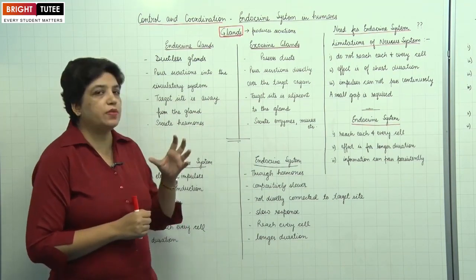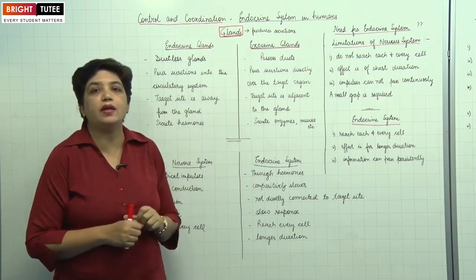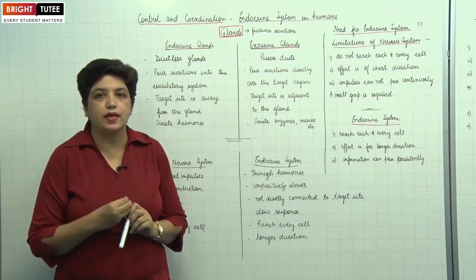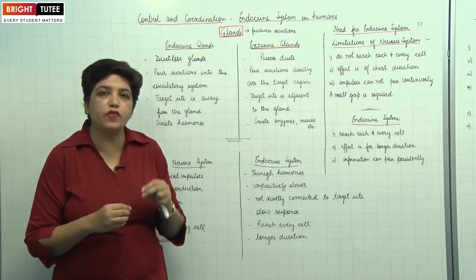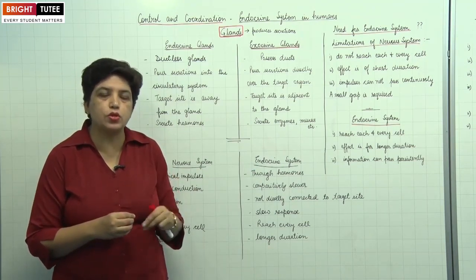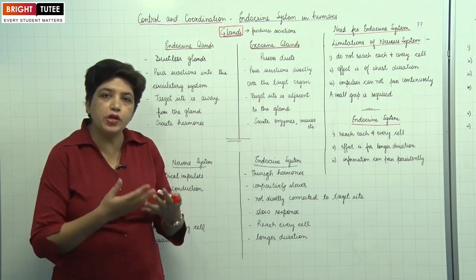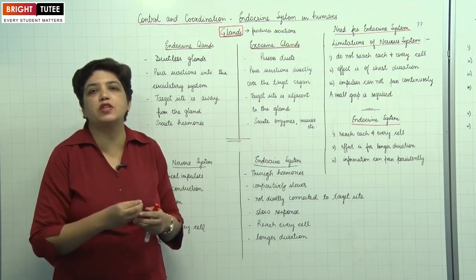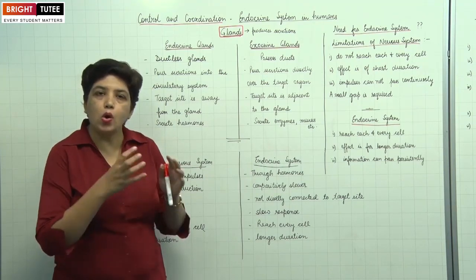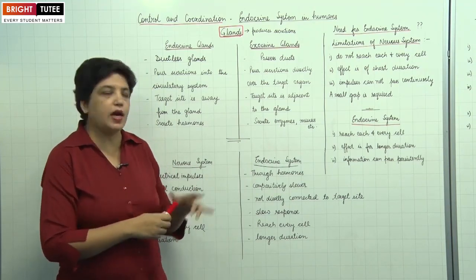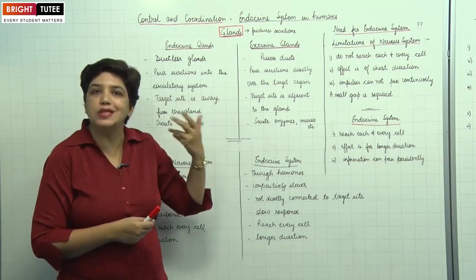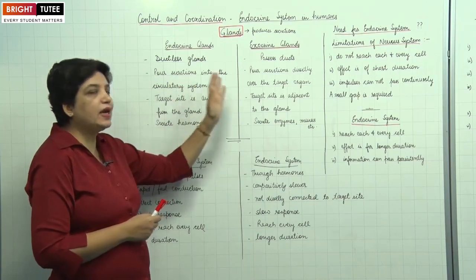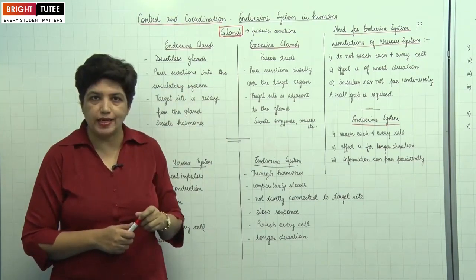The endocrine system is carried out by certain glands. Glands are certain specific cells, tissues, or organs that produce secretions, and those secretions perform certain specific functions. All such cells or organs that produce secretions are called glands. Broadly, there are two types of glands: the endocrine glands and exocrine glands.